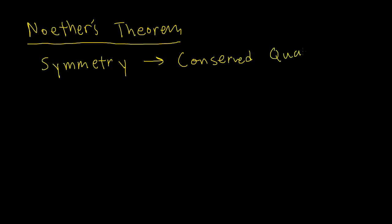But most people don't really give you a proof of this. And when they do give you a proof, a lot of times it's this kind of mystifying calculation, and you're left wondering what really happened there. My goal here is to give you an explanation of Noether's Theorem such that by the end of it, you'll really feel like, yeah, I actually get it. I actually see why it is, and it actually makes sense.